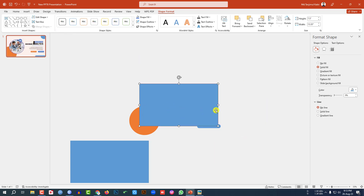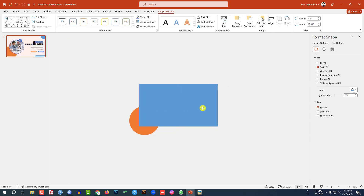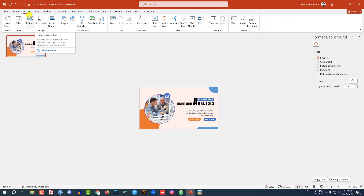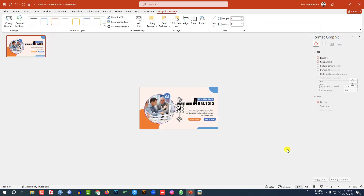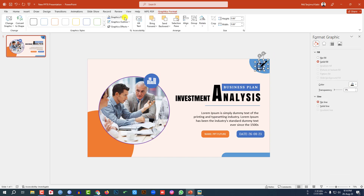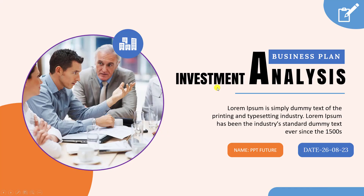Place this one over here. Select this one and this one, go to Merge Shape, click on Intersect. Now let me place this one, select this one and this one, go to Merge Shape, click on Intersect. Go to Insert, go to Icons, select the icons and click on Insert. Place them and resize them using the Shift key. Go to Graphics Format, Graphics Fill, make it white fill color.